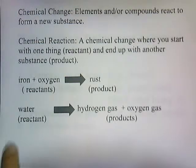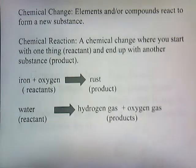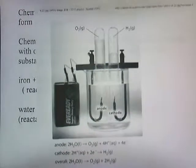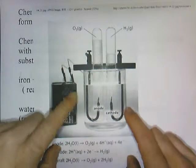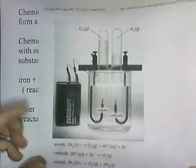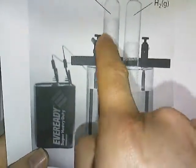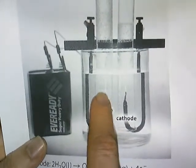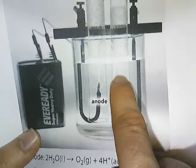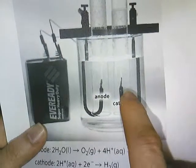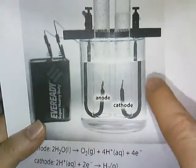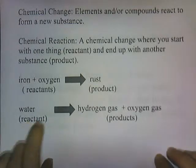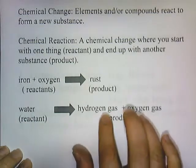Another type of chemical reaction: if you take water and pass electricity through it, you can separate it into hydrogen gas and oxygen gas. Here is a battery connected to a beaker filled with water, with two test tubes inverted in it. Electricity flows through the wires, and you can see little bubbles — those are gases being produced. Oxygen gas is being made at one wire and hydrogen gas at the other. You're starting with water and ending up with two new substances.